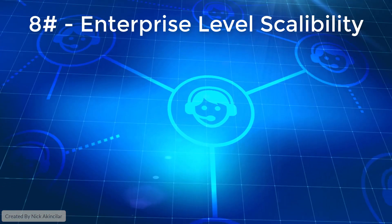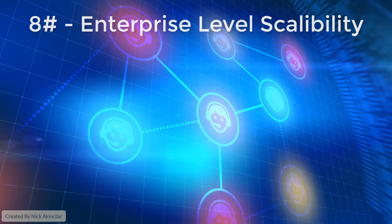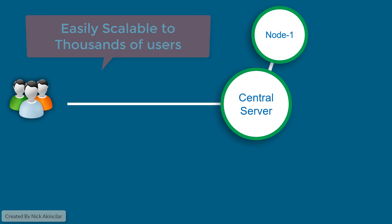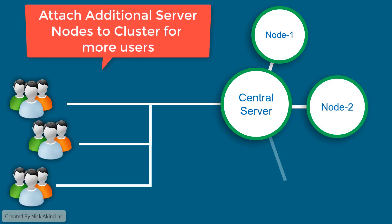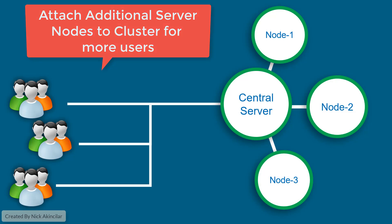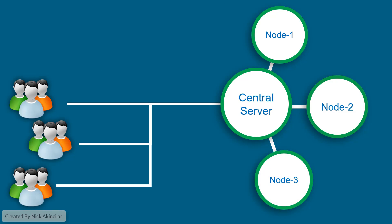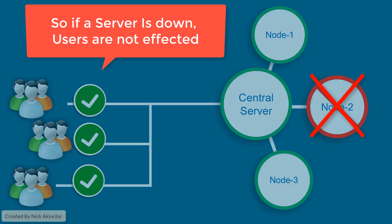Number eight: enterprise-level scalability. Qlik is a complete analytics platform that can easily scale to thousands of users. It is designed to scale horizontally by simply adding additional server nodes for increased user capacity. Automatic load balancing and failover systems are built right into the platform, so if any server goes down, others automatically distribute the workload for an uninterrupted user experience.